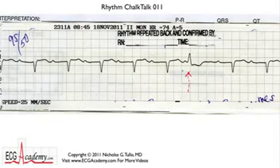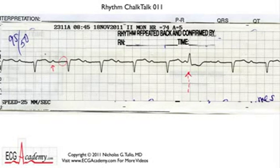Now let's look for P waves. If you kind of look in front of the QRS complex, you don't see much, but as you scan in between beats, there does appear to be a bump right there that seems like it could be a P wave. And if you look at some of the other beats in the same general region, you'll see that there seems to be a regular P wave that's marching on through.